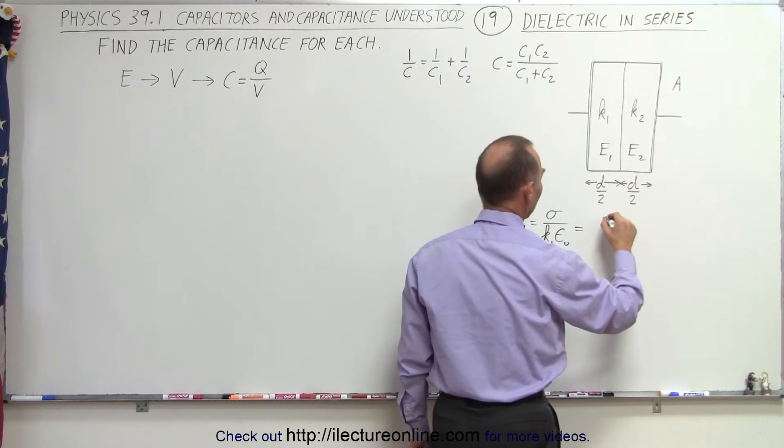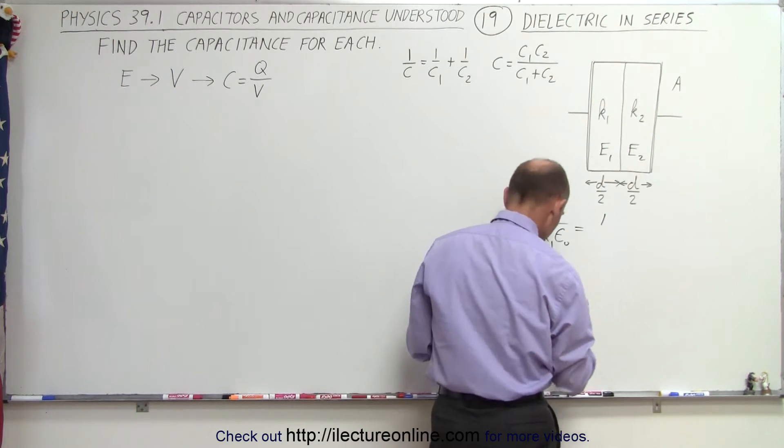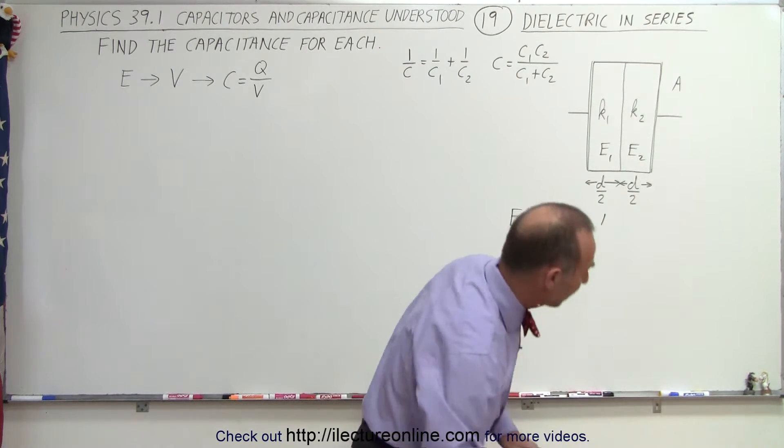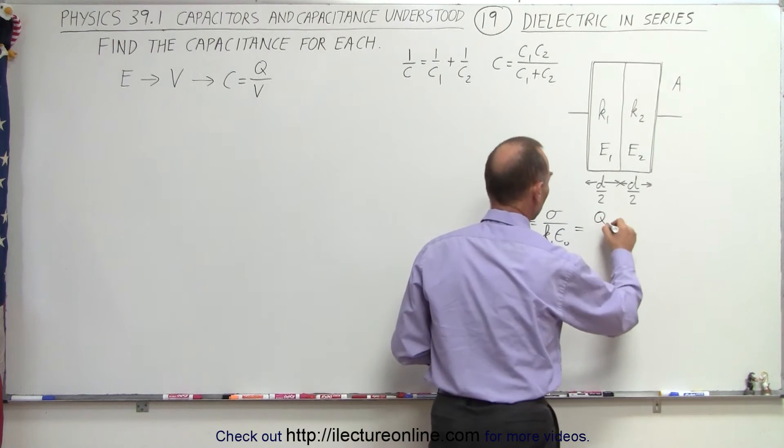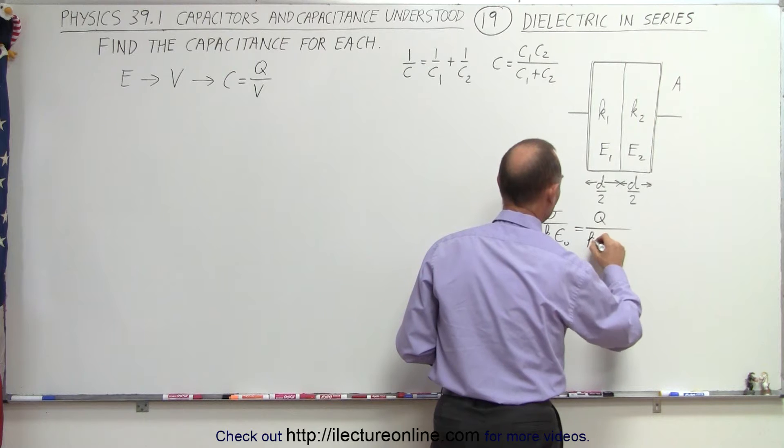So we'll write it like this, which then can be written as—not the area, that would be the charge on top, got the wrong variable at the top. So that would be equal to the charge divided by k1 epsilon naught times A.